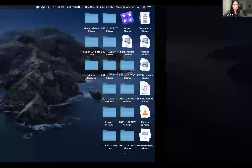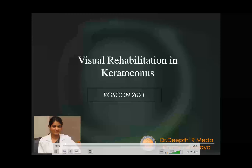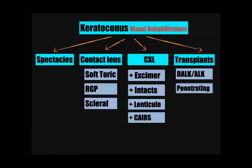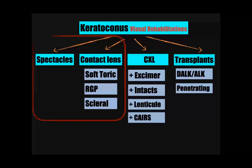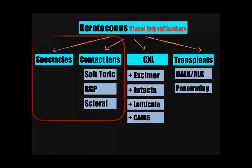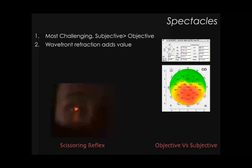The next talk will cover visual rehabilitation in keratoconus — a comprehensive overview of all modalities including spectacles, contact lenses, CXL, various procedures, and corneal transplants. Spectacles and contact lenses are the most common modalities used clinically but are least spoken about. The majority of our patients manage their lives with glasses and contact lenses, so it is very important to give them a good pair of glasses.